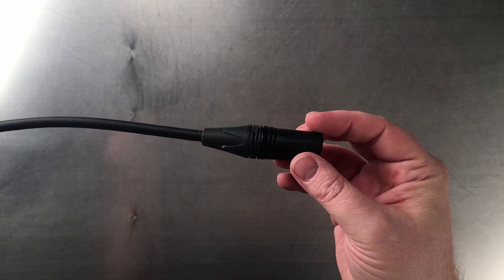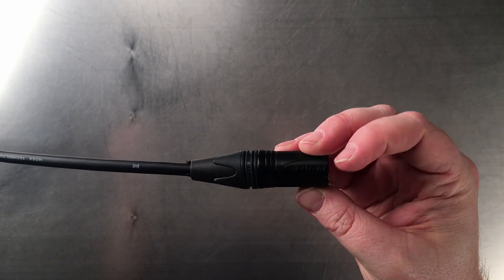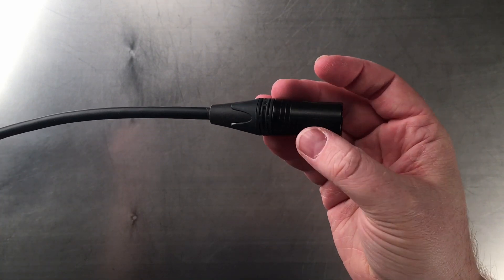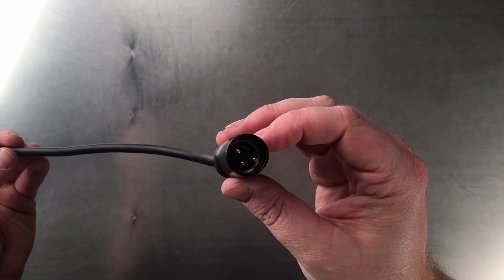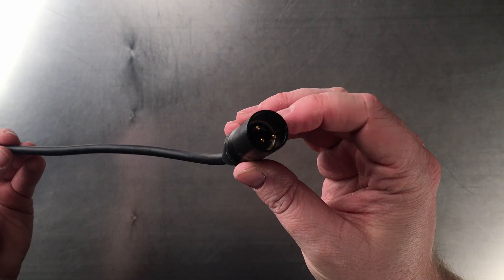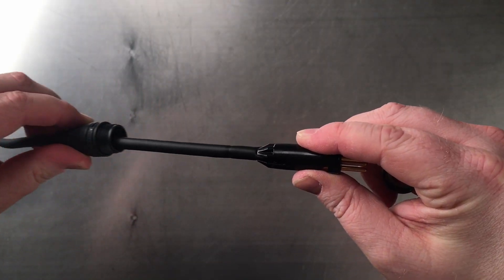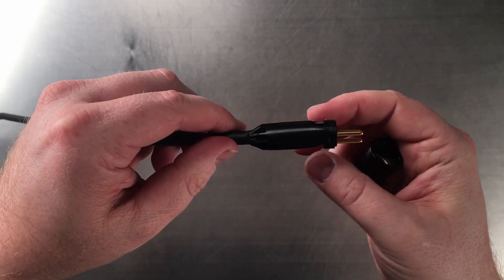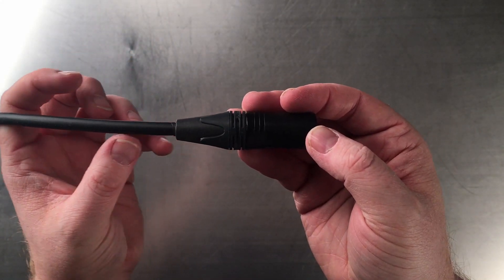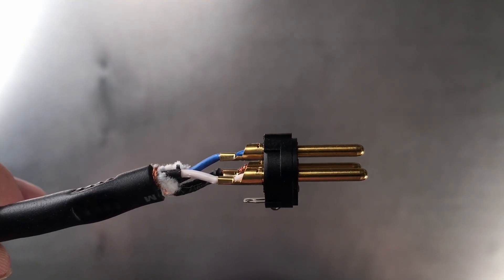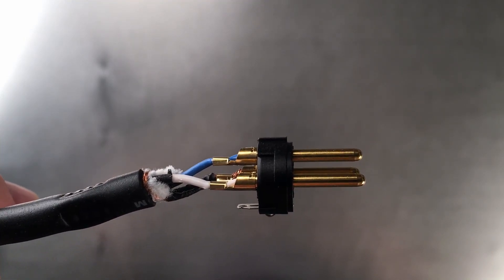The Edge series connector is made by Neutrik AG, which uses nickel housing with a zinc die-cast shell, gold-plated contacts — which as we established is both more conductive and less prone to corrosion than nickel — chuck-type strain relief, a boot with polyurethane gland, and the connections are actually crimped as opposed to soldered.